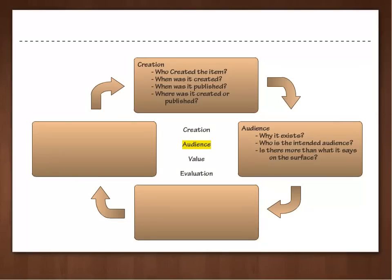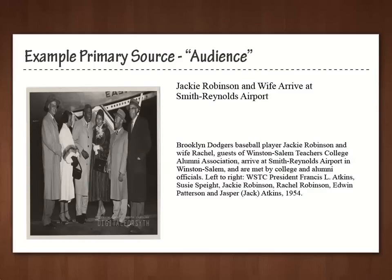Now let's focus on the second part of evaluation, which is Audience. Here we look to answer: Why does the image or item exist? What was the intent of the item? Who is the intended audience? And is there more to what it says on the surface? Using the metadata, we can discover that this image was a promotional piece, taken to circulate through the community and the Teachers College to promote the visit of Jackie Robinson. The intended audience would be students, faculty, staff, and the community as a whole. To discover whether there's more to this image than what we see on the surface, we would research why Jackie Robinson was actually visiting Winston-Salem Teachers College, helping us paint a bigger picture as to why he was on campus.